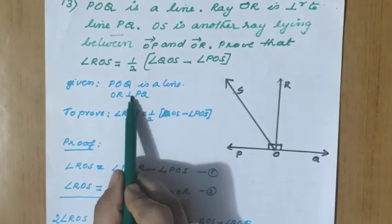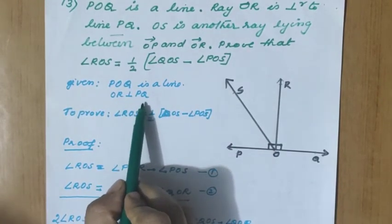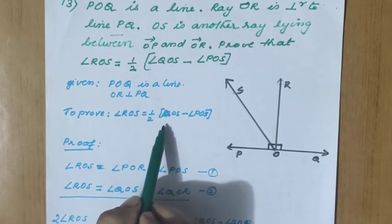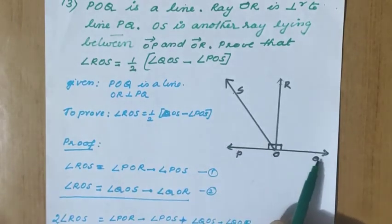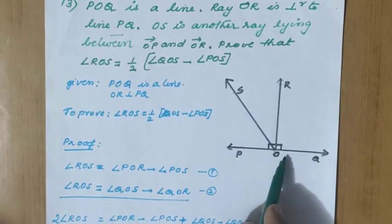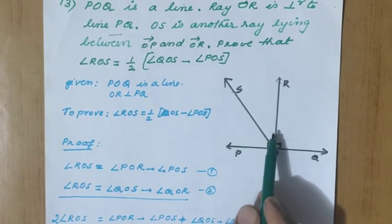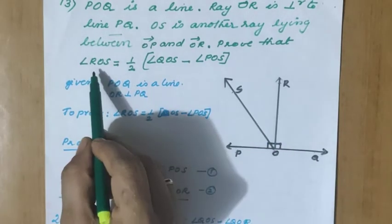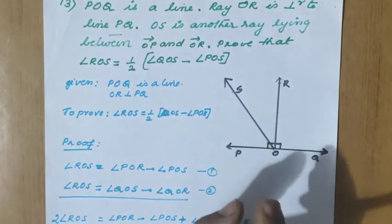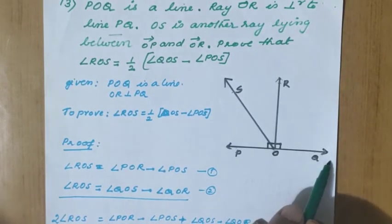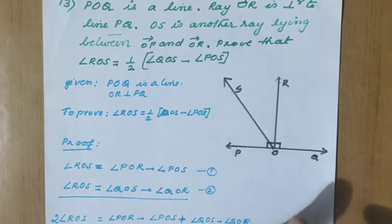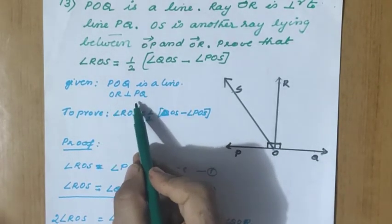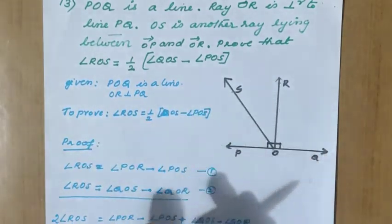First, write what is given: POQ is a line, OR is perpendicular to PQ. To prove: angle ROS equals half into angle QOS minus angle POS. Draw the diagram: POQ is a line, OR perpendicular to PQ is the second line, and OS lies between OP and OR. No construction is needed. While reading the question step by step, you complete the diagram on the right-hand side. These steps must always be followed when solving a geometrical question.